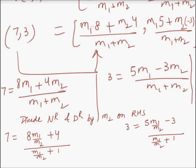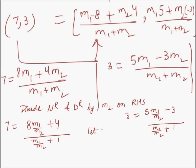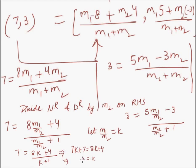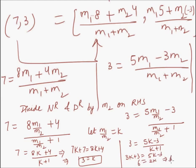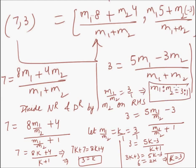Let us denote M1/M2 by K. Thus we get 7 = (8K + 4)/(K + 1), that is 7K + 7 = 8K + 4, or K = 3. Similarly from the second equation, 3 = (5K − 3)/(K + 1), giving 3K + 3 = 5K − 3, or 2K = 6, so K = 3. Since K = M1/M2 = 3/1, we conclude M1:M2 = 3:1 is the desired ratio.